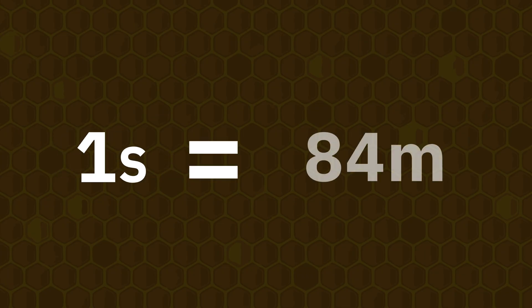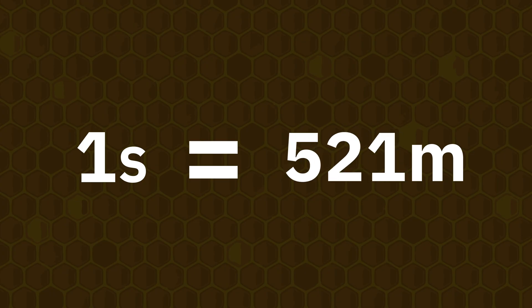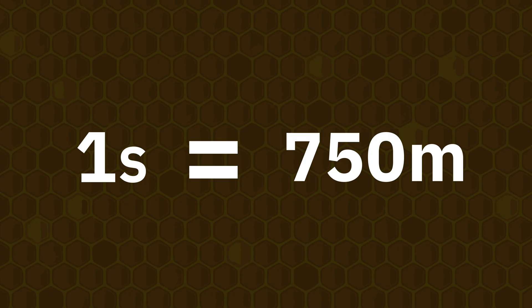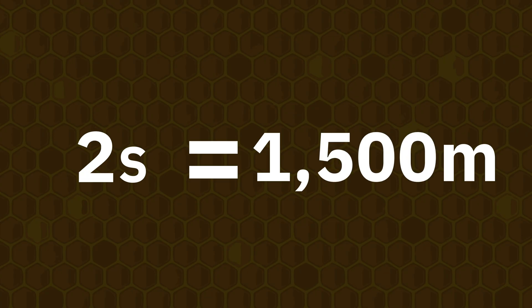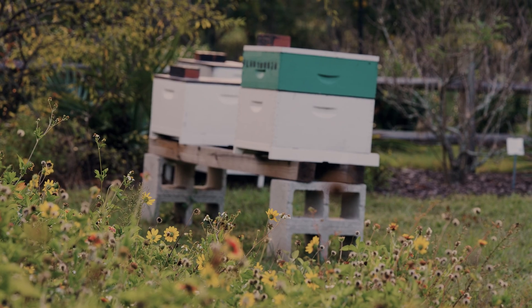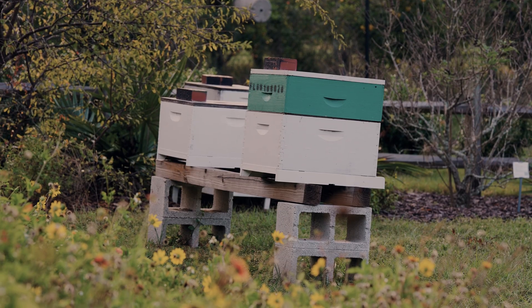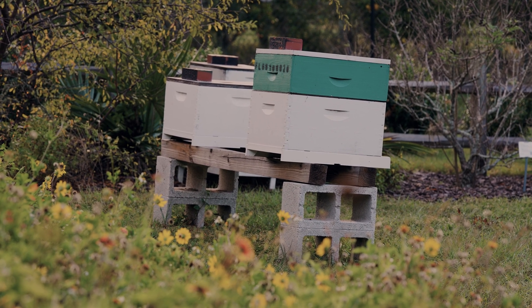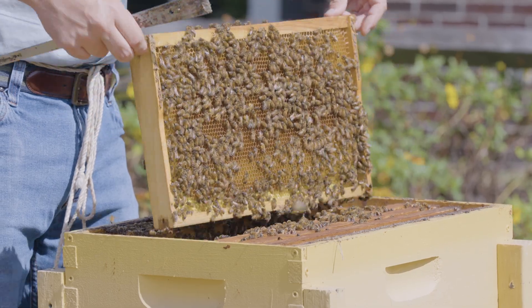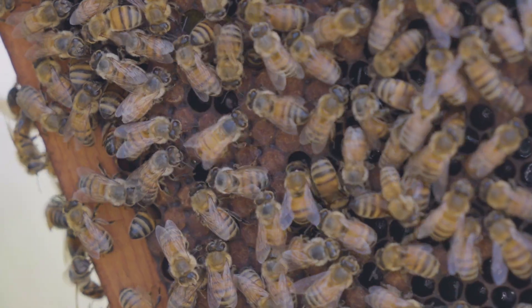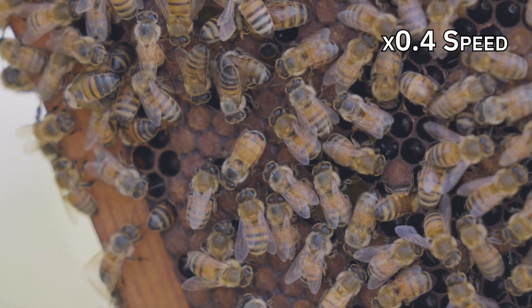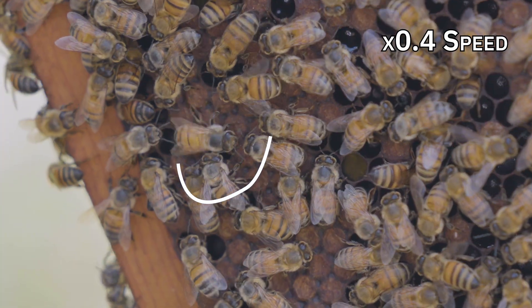Generally speaking, every one second that a worker bee dances in the straight run equals about 750 meters distance from the hive. So if she dances two seconds in the straight run, she is communicating that food resources are about 1,500 meters or about 1.5 kilometers from the nest. One second equals about 750 meters. Keep in mind this can vary by the stock, race, or strain of bee and by location, so these are generalizations. These directions get the foragers about 90% of the way to the resource, with odor cues helping them zero in the rest of the way.